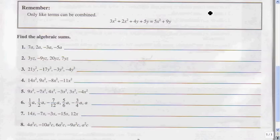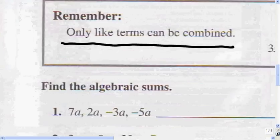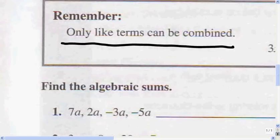One of the things that you need to understand in algebra is what they're telling you here, and that is that only like terms can be combined. What are like terms? Like terms are terms that have the same variable and the same exponent.